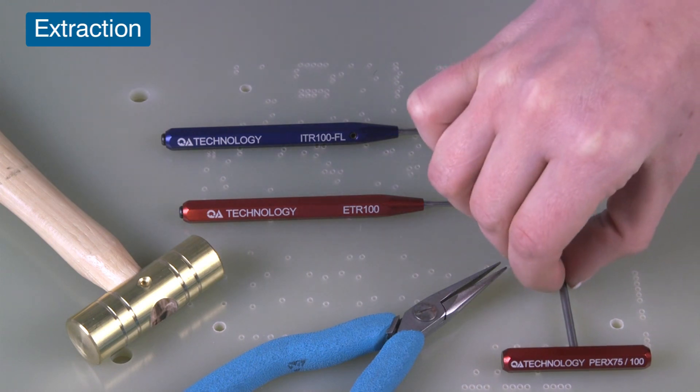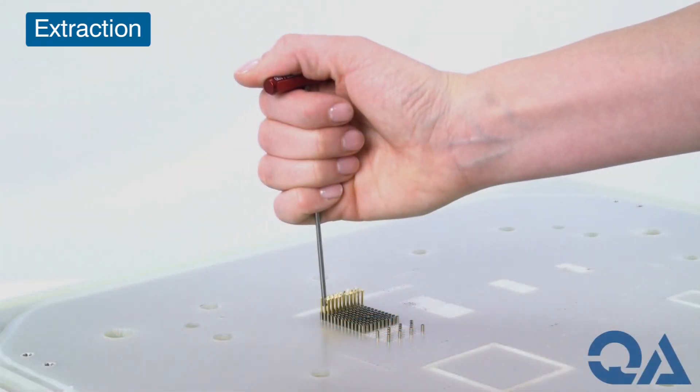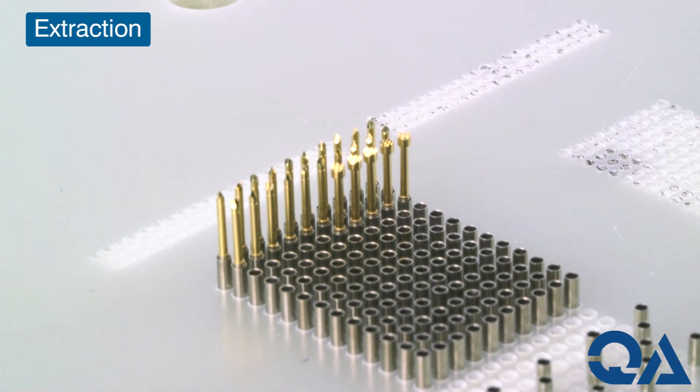For headed probes, slide the hook of the extraction tool under the head and pull straight up to remove the probe.